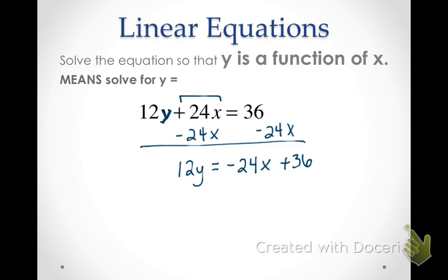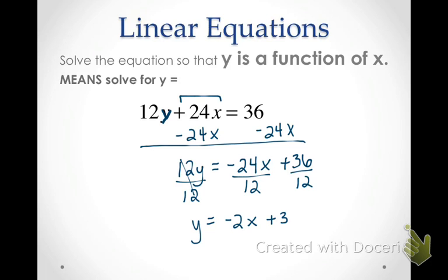I don't quite have y alone yet, so I'm going to divide everything by 12 — the left side by 12 and every term on the right side by 12. I'm left with y equals... for the first term on the right I have negative 24 over 12, which is negative 2x. Negative 24 divided by 12 is negative 2. And 36 divided by 12 is positive 3. So my answer is y equals negative 2x plus 3.